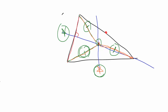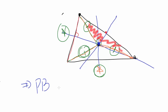Now look at the third side. This intersection point is equidistant from the endpoints of the third side. And we just proved that a point equidistant from the endpoints of a segment must lie on the perpendicular bisector of that segment. So if we draw the perpendicular bisector of the third side, this point has to be on it. And what have we just proven? The perpendicular bisectors of a triangle are concurrent — they all meet at the same point.